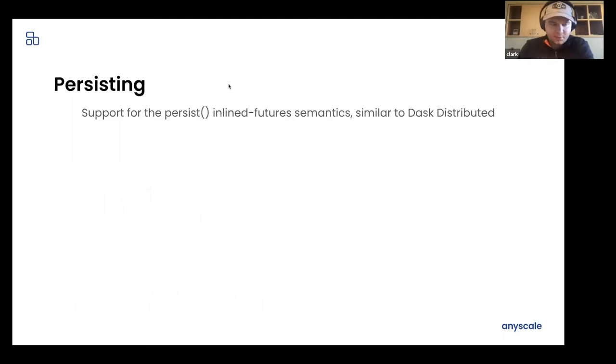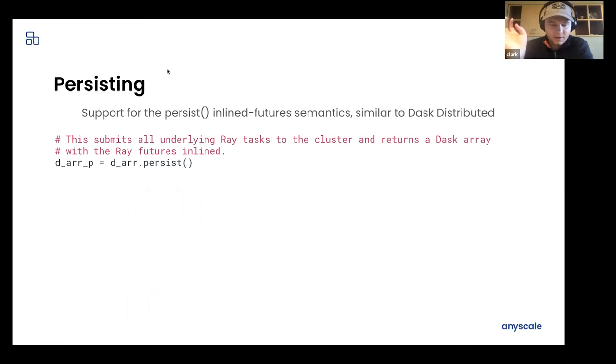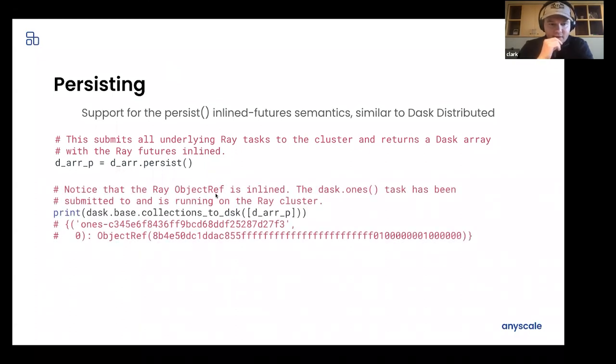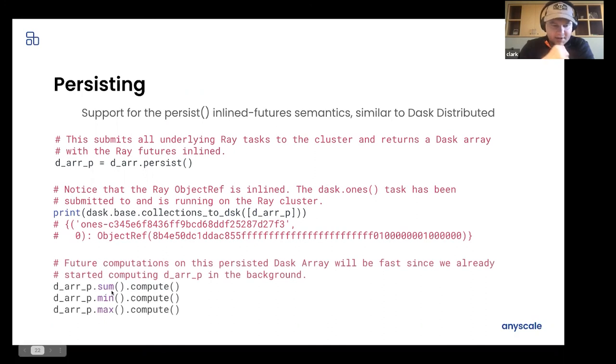And then for persisting, we support the inline future semantics of Dask distributed when you persist a Dask collection, where all the tasks are still submitted for computation on the Ray cluster when you call .persist, but it inlines these object ref futures instead of blocking until the underlying result is available and returned. So this is very useful for, you persist to launch computation. And then, for example, if you're in a Jupyter notebook, you'd persist this array after doing some operations on it. And then you'd want to do a bunch of other, maybe little aggregations on top of this base array. And these will all execute pretty quickly because that base computation was launched earlier. And it'll just be operating on those futures that are inlined in the Dask collections. So we support the Dask distributed future semantics for persist, which I think is nice.